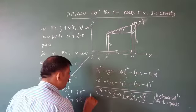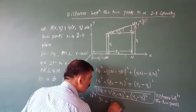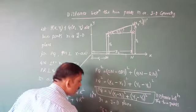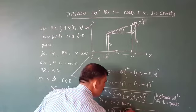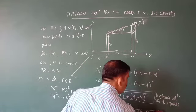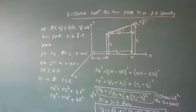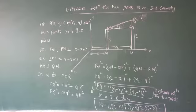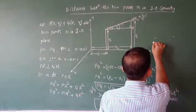Similarly, in a three-dimensional plane, the distance formula becomes: PQ = √((x2 − x1)² + (y2 − y1)² + (z2 − z1)²). So the distance between two points P(x1, y1, z1) and Q(x2, y2, z2) is the square root of (x2−x1)² + (y2−y1)² + (z2−z1)².